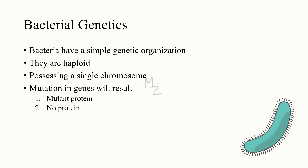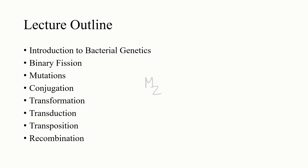Lecture outline: I've introduced you to bacterial genetics. Now we'll be talking about binary fission, a type of reproduction that bacteria use. Then we'll look at mutations, conjugation, transformation, transduction, transposition, and recombination. Let's dig in.